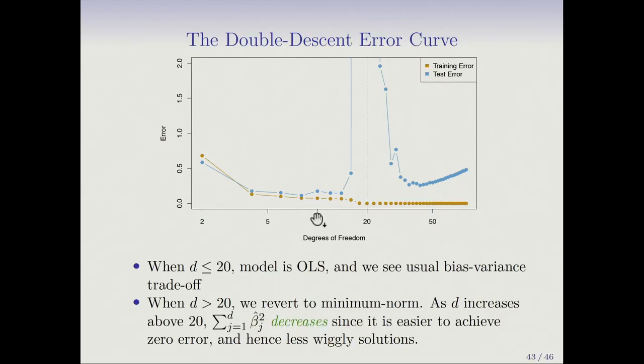Here's the result, and this shows the double descent curve. On the horizontal axis we show the degrees of freedom d as we add basis functions; on the vertical axis we show the error. The test error is in blue and the training error is in orange. The training error over the 20 observations drops as d increases, hits zero at d equals 20, and remains zero thereafter. The degrees of freedom are shown on a log scale.